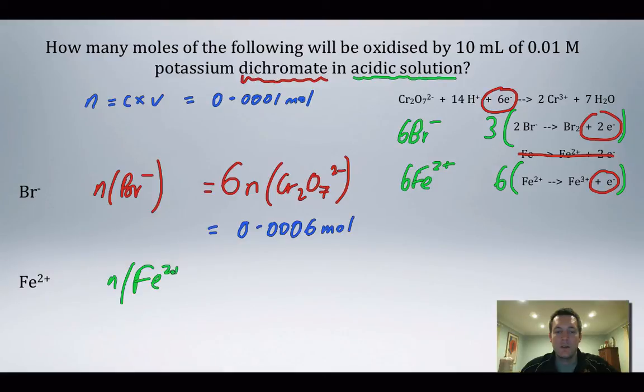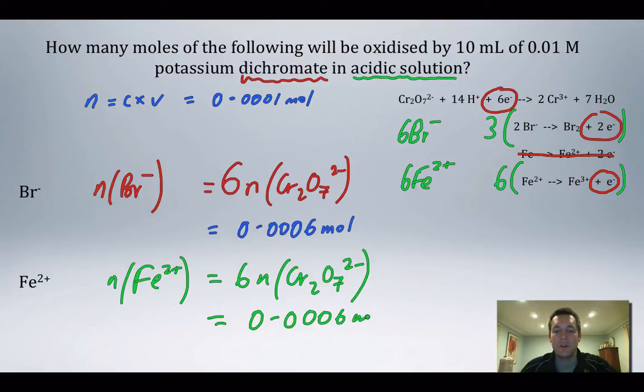You can see that there's six of these ions to react with one mole of the dichromate ions, so the number of moles of Fe²⁺, rather like it was with the bromide, is equal to six times the number of moles of Cr₂O₇²⁻, which isn't any different to what it was before—it's 0.006 moles.